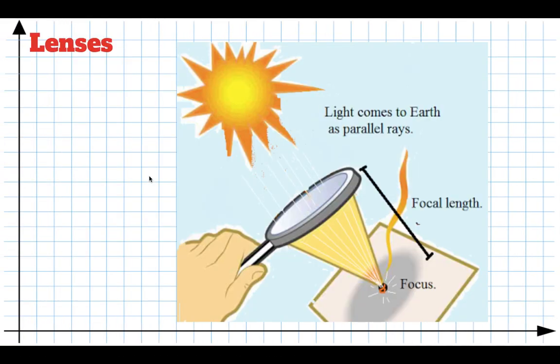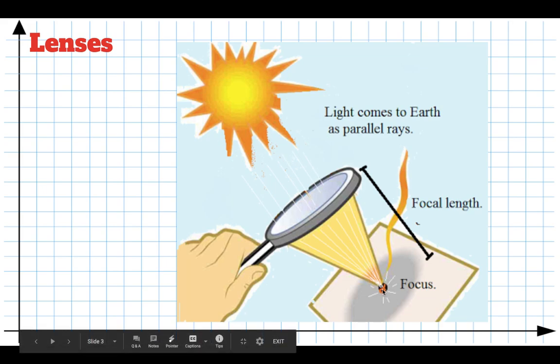And that's what we call a lens. A lens is a special device which bends light, made so that all the light that hits it — coming in parallel — gets bent to a point.